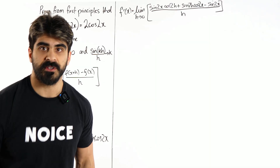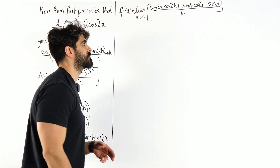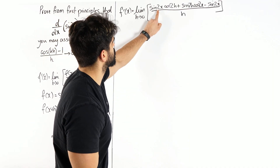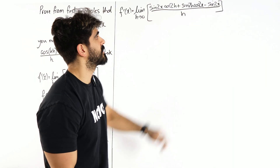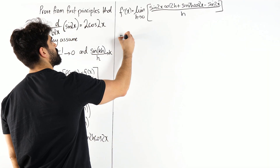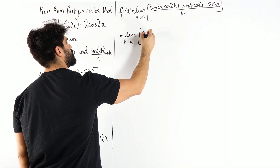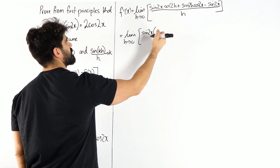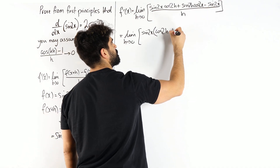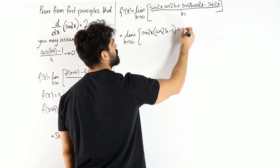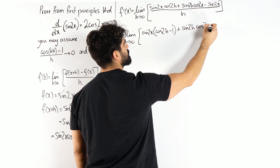Minus f(x), which is sin 2x, all over h. The next thing we need to do is collect like terms and factorise. Can you see the sine 2x and the sine 2x? Treating them as if they're next to each other, we can factorise out the sine 2x. So we get the limit as h tends to 0 of sin 2x(cos 2h minus 1) plus sin 2h cos 2x, all over h.